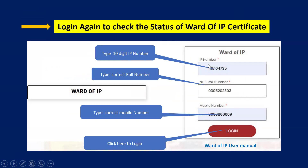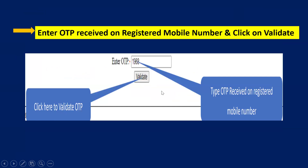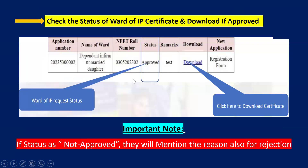Next, log in again with your login details — IP number (from the IP card) and mobile number (same as the linked mobile number to your ESIC account) — then click on Login. Enter the OTP again and click on Validate. Now you can see the status of your Ward of IP Certificate — whether it is approved or not. After submitting the online application, it takes three or four days to approve. Check the official website regularly. If the status shows Approved, click on Download to get the Ward of IP Certificate.